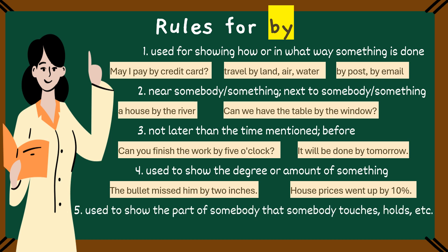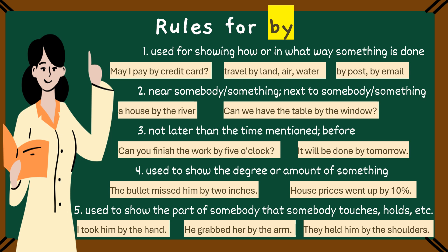Showing which part of someone or something is touched or held. Finally, we have the last rule for by. By is used to show which part of a person's body is touched or held. For example, I took him by the hand. This means holding his hand. Next, he grabbed her by the arm. Here, by indicates that the arms were the part that were held. And the last one is, they held him by the shoulder.